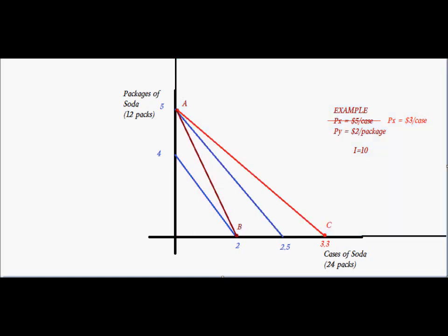Now you've got an example of how to draw indifference curves for substitutes, and how to think about how budget constraints interact with these types of indifference curves. This is one case where, with probability one, you're going to end up with a corner solution. You're going to spend all of your money on the good that is the cheapest good. That's the result you end up with when you have perfect substitutes.